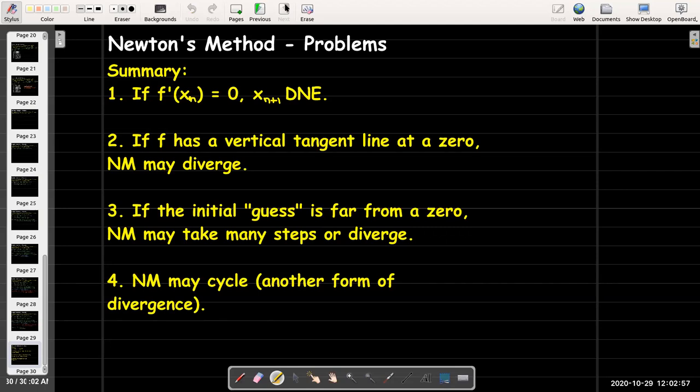So in summary, we have to be concerned about having the derivative at an approximation equal to 0. At that point, we have to stop because the next approximation does not exist. Division by 0 does not exist. If we have a vertical tangent line at a 0, Newton's method may diverge. If the initial guess is far from 0, Newton's method may diverge or it just may take many steps before you find the 0. And then finally, Newton's method may cycle.